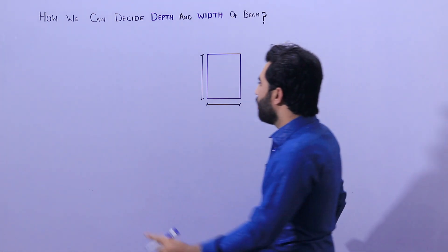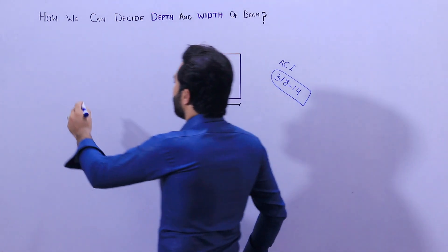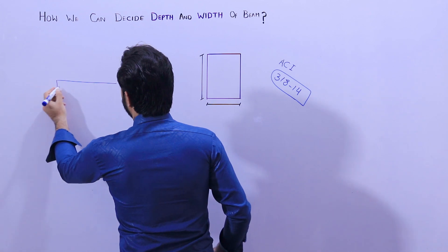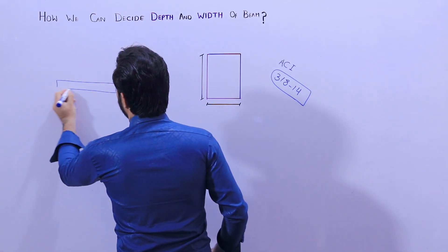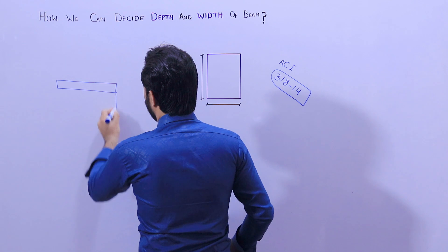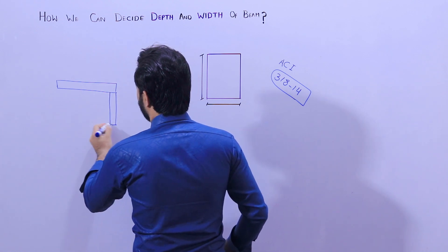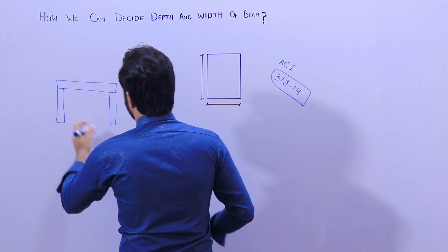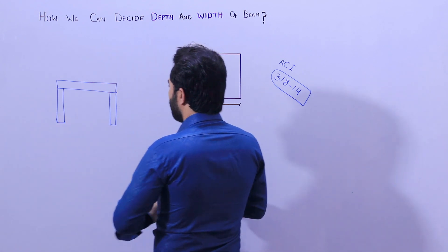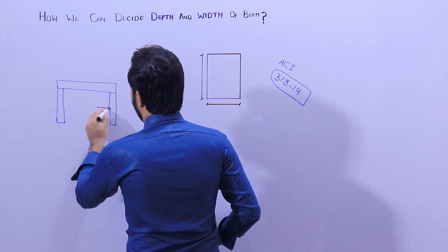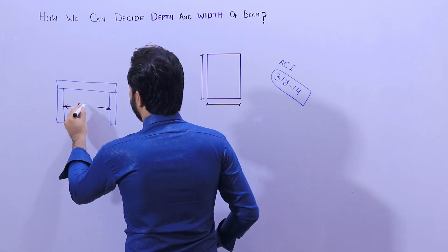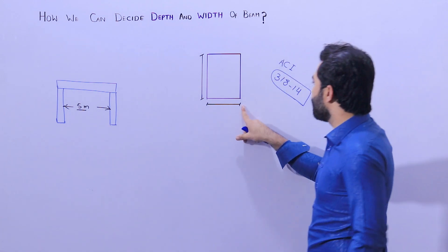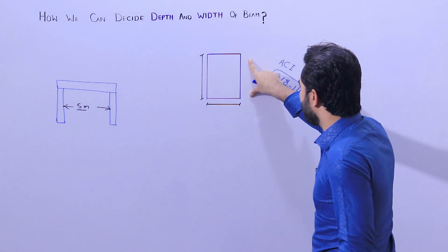First of all, if you know the length of the beam — or the span between two columns — suppose this is a beam and these are the supports, which means these are the columns. Suppose the span between two columns is five meters. So what should be the depth of the beam?